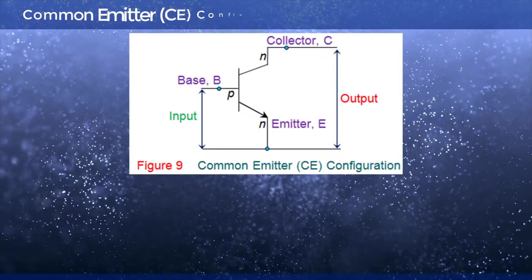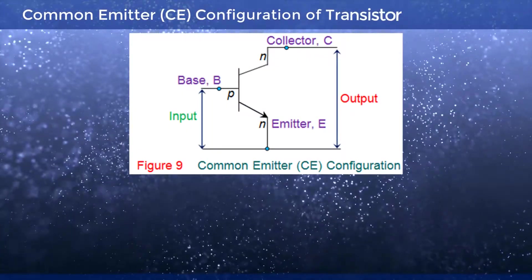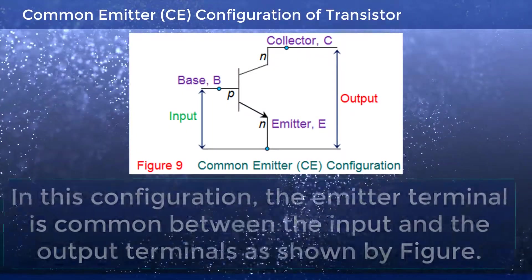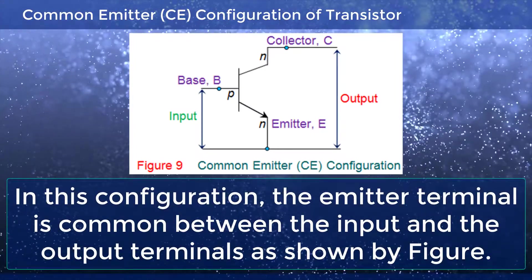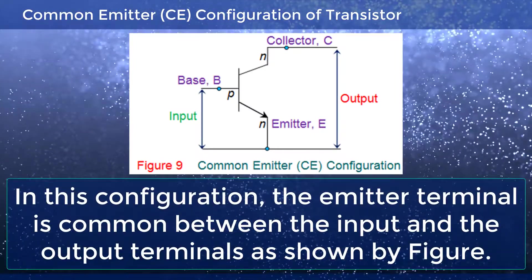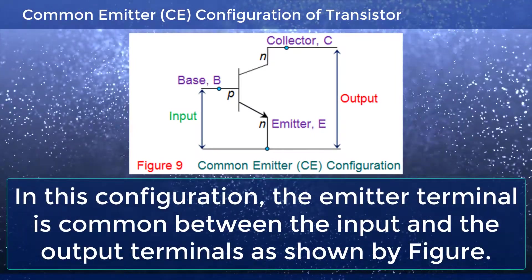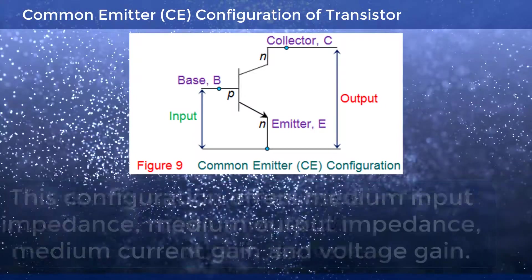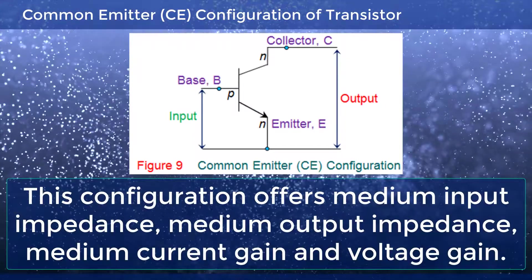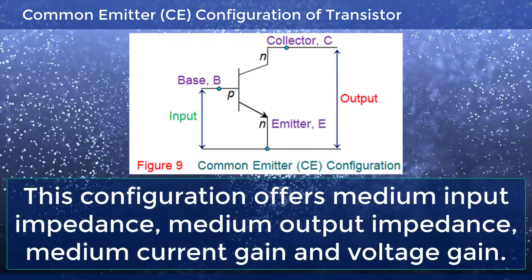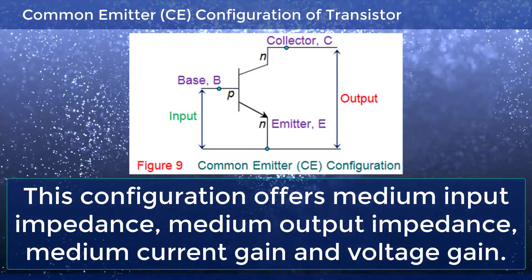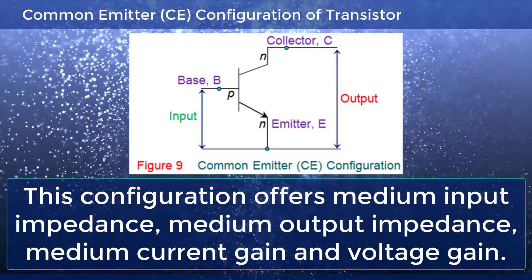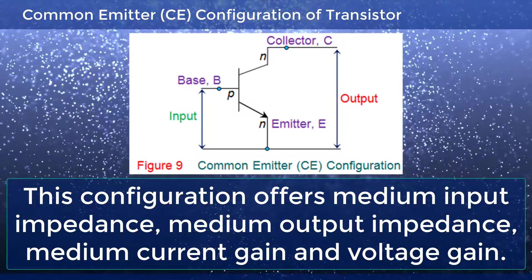In the Common Emitter configuration of Transistor, the emitter terminal is common between the input and output terminals as shown. This configuration offers medium input impedance, medium output impedance, medium current gain and voltage gain.